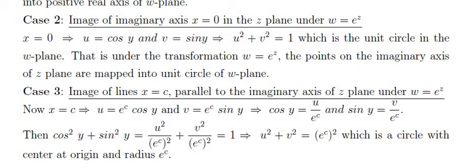Case 3: Image of the line x = c (parallel to the imaginary axis) under w = e^z. Substituting x = c: u = e^c cos y and v = e^c sin y. Solving for cos y and sin y and applying cos²y + sin²y = 1 gives u² + v² = e^(2c), which is a circle centered at the origin with radius e^c.